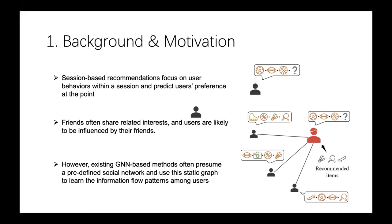For example, funny videos can spread along social networks, and introducing friends' viewing behaviors can effectively make timely recommendations when target users show relevant short-term interests. Graph neural networks have successfully modeled users' relationships for recommendations. However, existing GNN-based methods often presume a predefined social network and use this static graph to learn the information flow pattern among users.